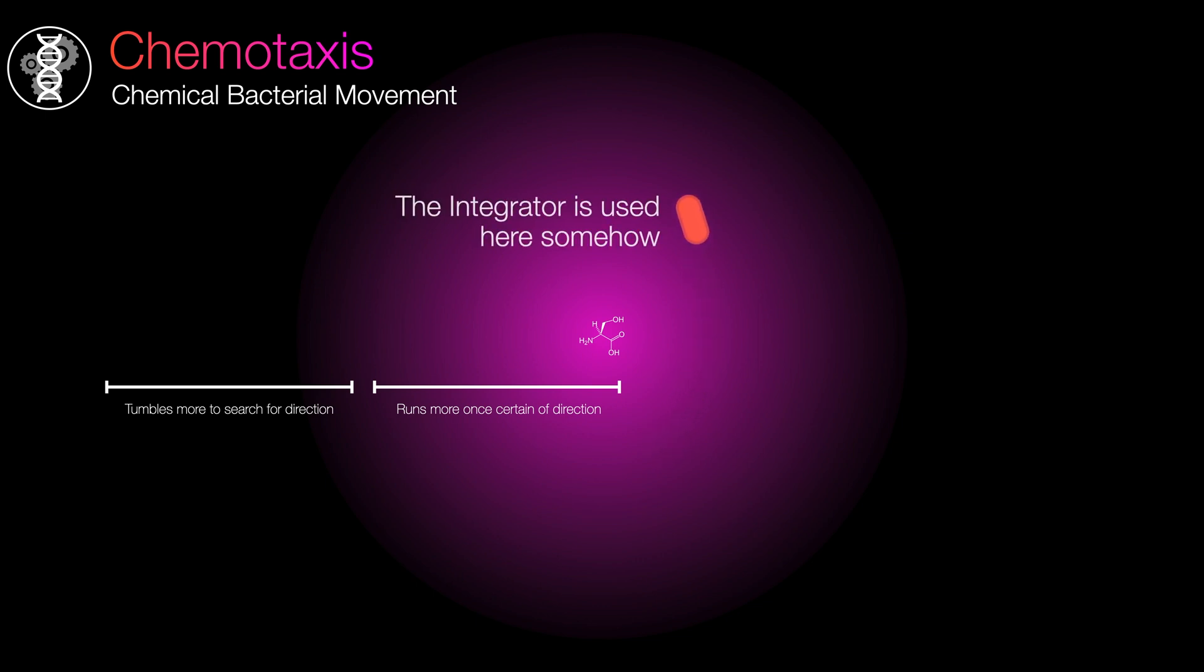They tumble more frequently to randomly search for the direction of food, while they run more often when they have a higher level of certainty about the location of the food. What I'm emphasizing here is that the integrator is not just a part of chemotaxis, it plays an integral role in the process. So, let's continue our investigation to uncover the reasons behind this phenomenon.